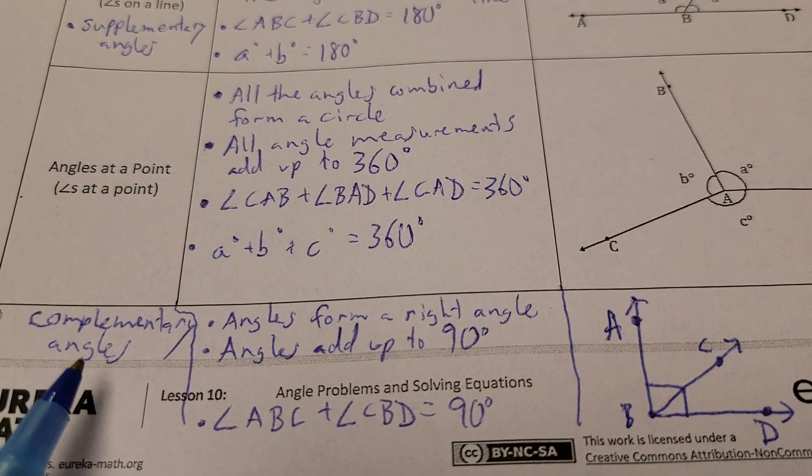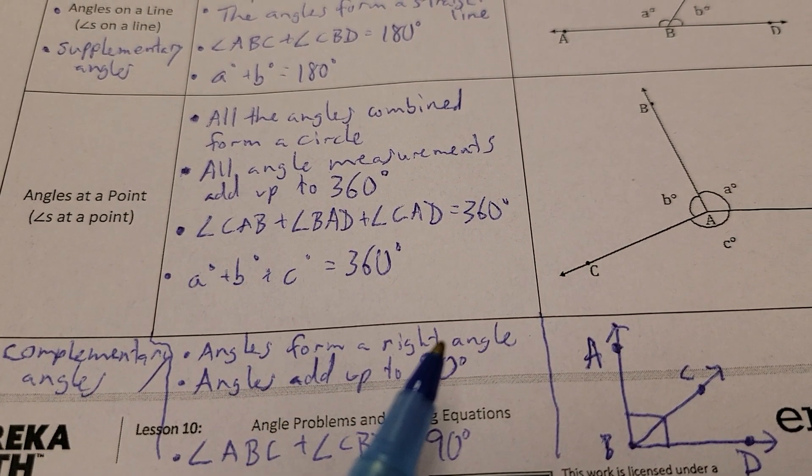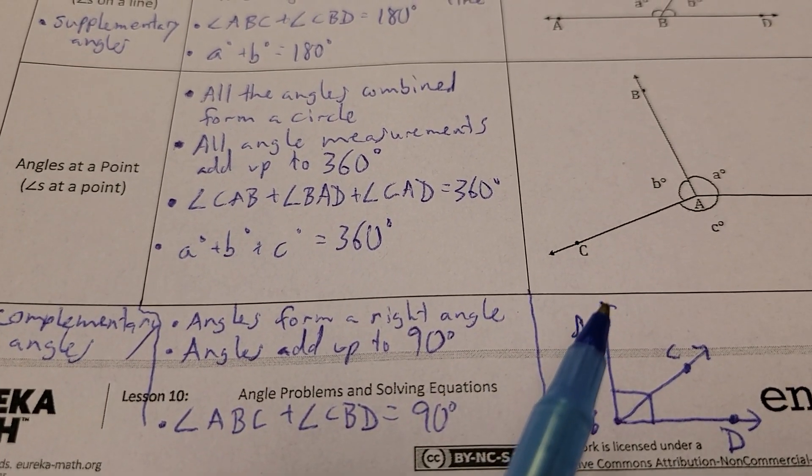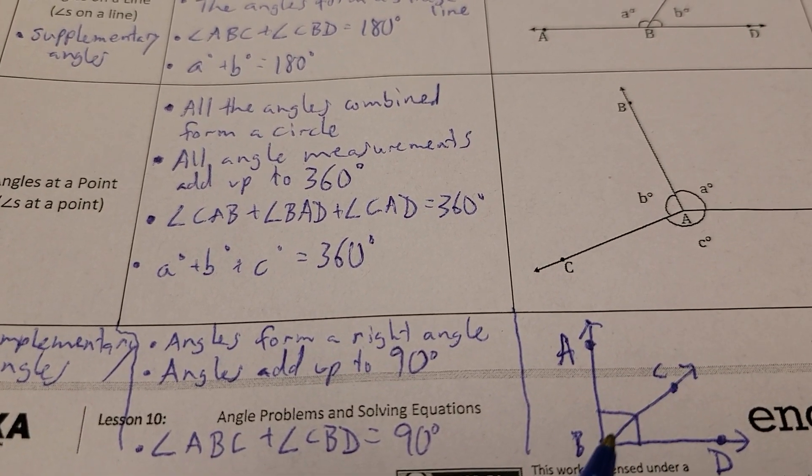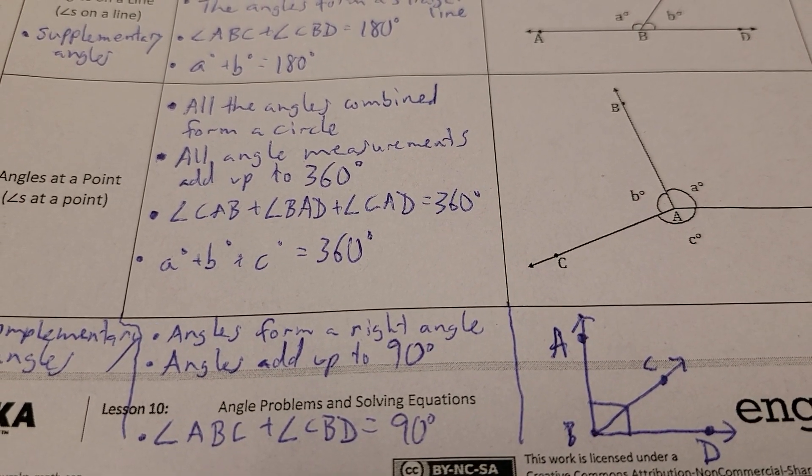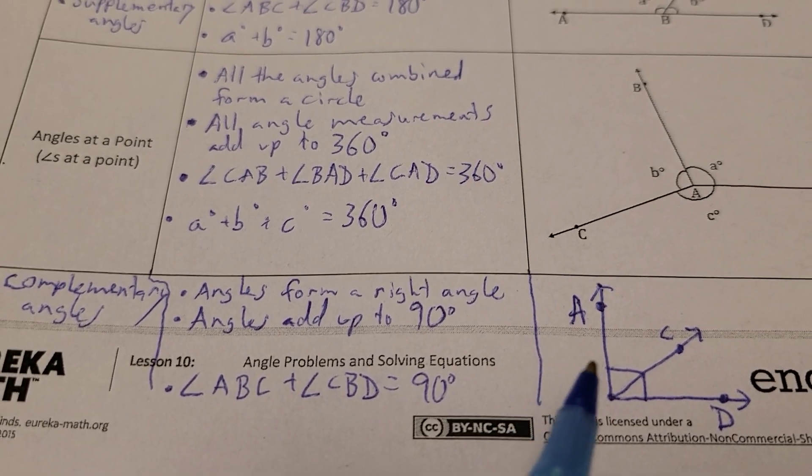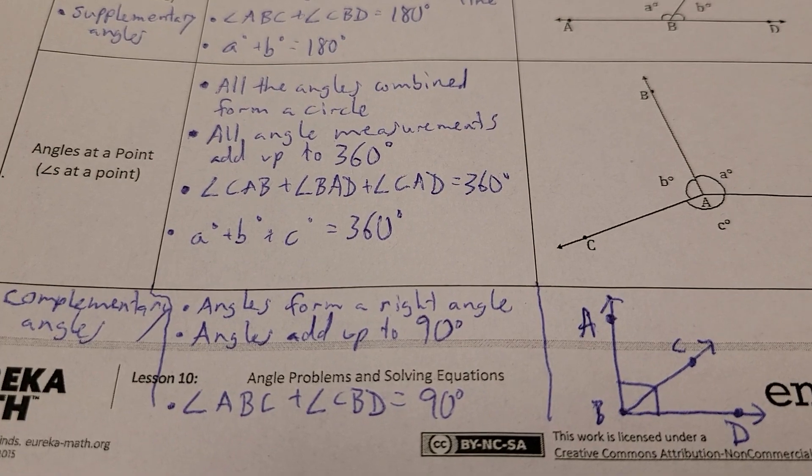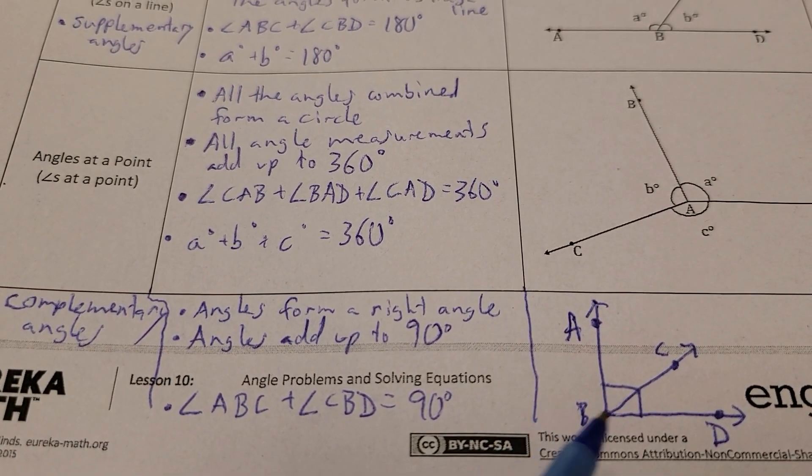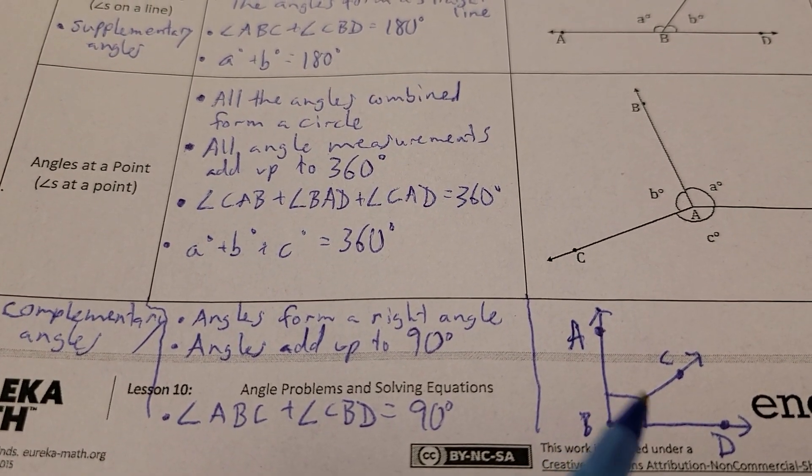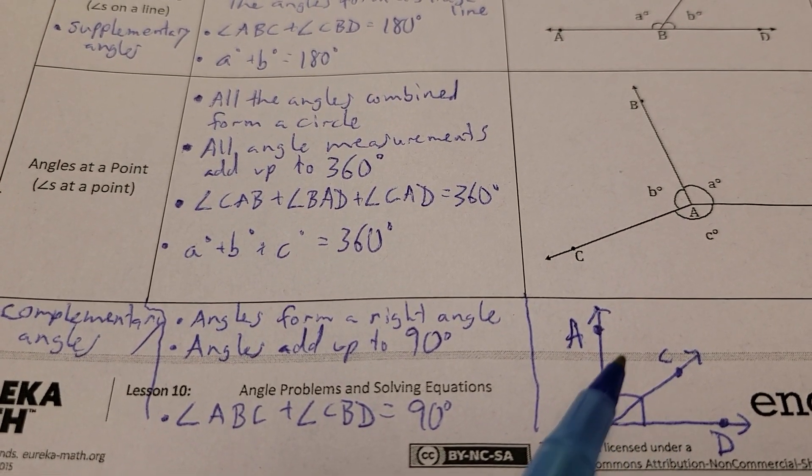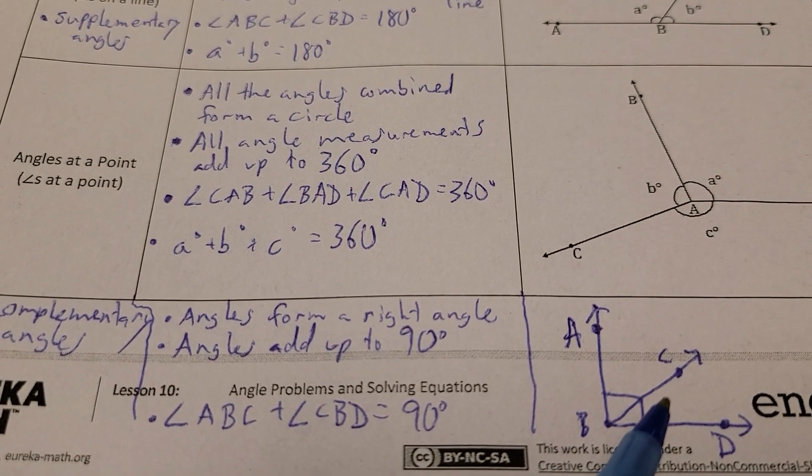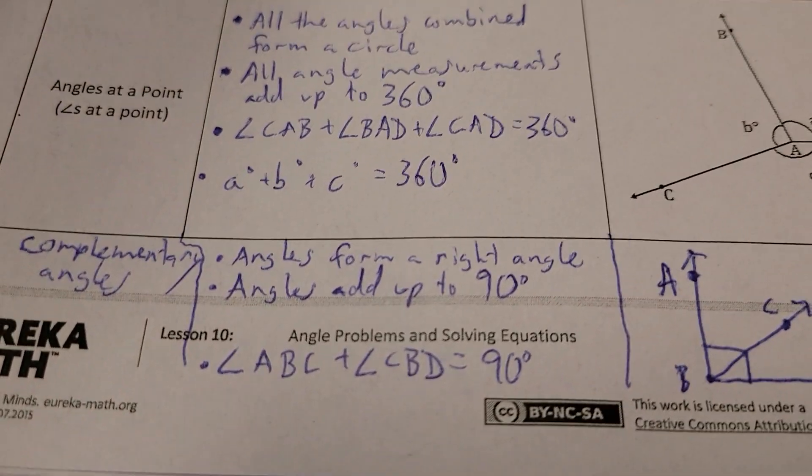Now, there's one that they didn't show us. I'm not sure why they didn't put this on here, but it's something you need to know. Referred to as complementary angles. These are angles that form a right angle, and they add up to 90 degrees. In this picture, angle ABC, angle CBD, add up to 90 degrees. And 90 degrees, a lot of times, is indicated by a box. A little box in a corner, that officially tells you that something is going to be 90 degrees. This angle here, and this angle here, have to add up to 90. So, maybe this is like 50 degrees, maybe this is 40 degrees. 50, 40, make 90.